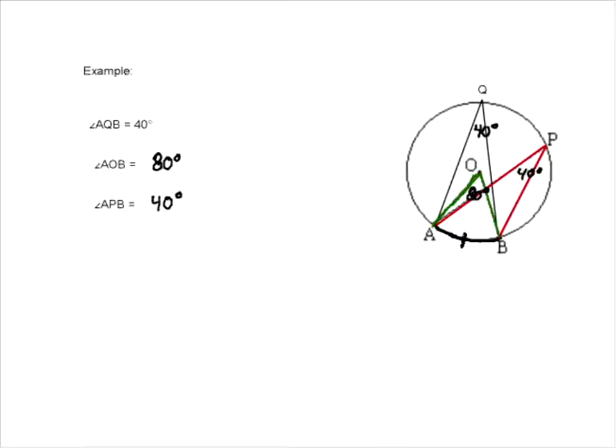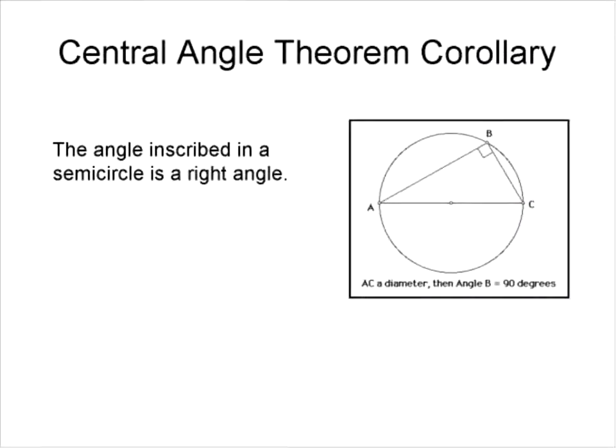And that's just using those theorems to solve these circles. Again, fairly straightforward math, fairly simple. Now here's a corollary to the central angle theorem. You may not have heard the word corollary before, but this is just a special case of the central angle theorem. And the inscribed angle in a semicircle is a right angle.